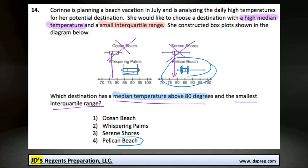So it's as simple as that. Pelican Beach has a median temperature above 80 and the smallest interquartile range. Thanks for visiting JD's Regents Preparation.